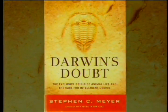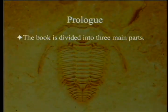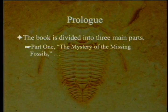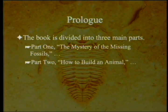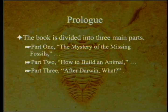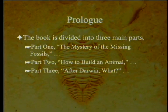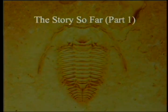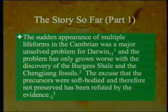The book itself states in the prologue that it is divided into three main parts: Part 1, The Mystery of the Missing Fossils; Part 2, How to Build an Animal; and Part 3, After Darwin, What? Everything I'm quoting is on a plain background. When I summarize in my own words, those will have a green background.